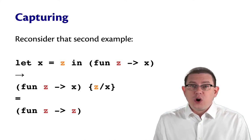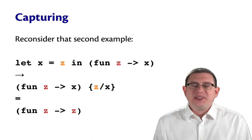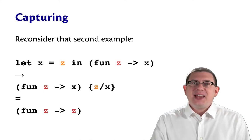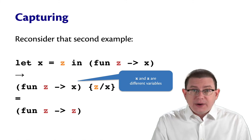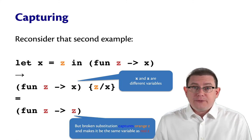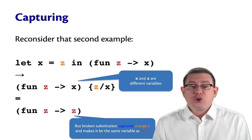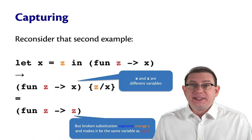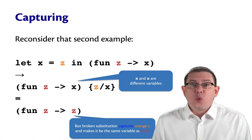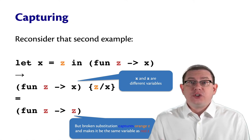we're letting the orange z get clobbered by the red z. The technical term here is captured. X and z are actually different variables, but the broken definition of substitution captures the orange z and makes it be the same variable as the red z. It breaks the way we expect scope to work.